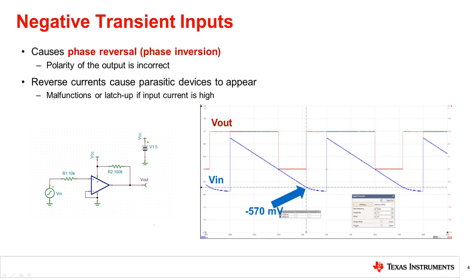This phase reversal condition is shown in the figure below, which shows the transient analysis of a comparator in a non-inverting configuration. As the input signal goes below 0 volts, the output of the comparator goes low as expected. However, as the input reaches about negative 570 millivolts, the output inverts and goes high even though this is not the correct operation of a comparator. This is what we call phase reversal or phase inversion.